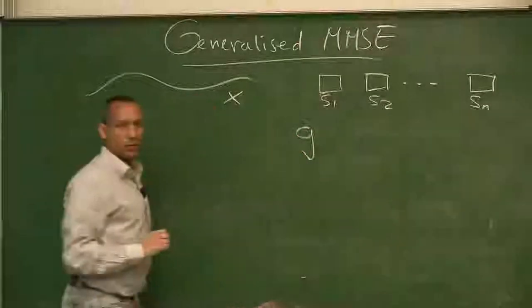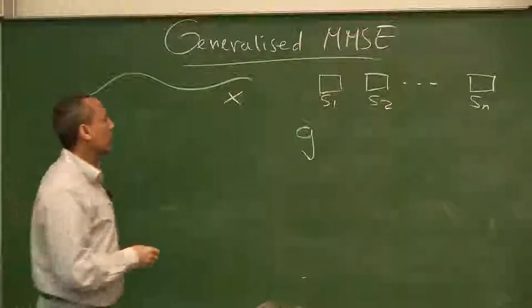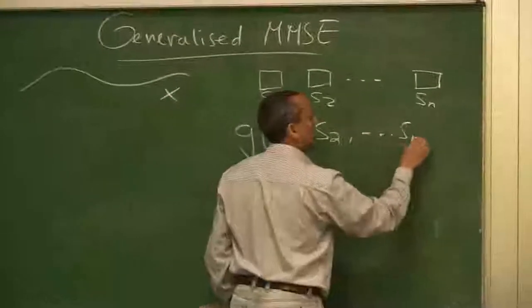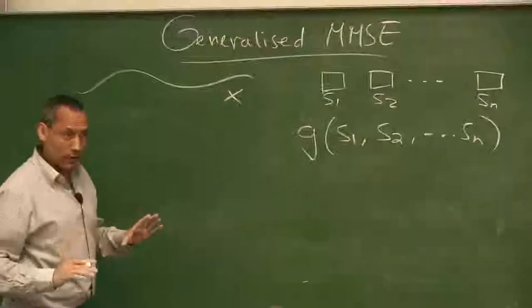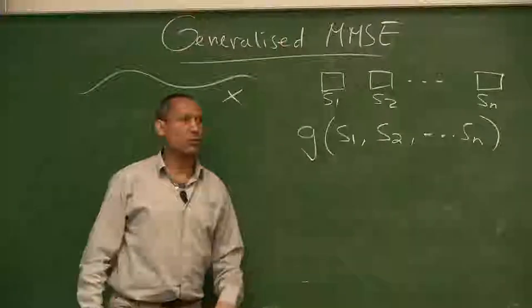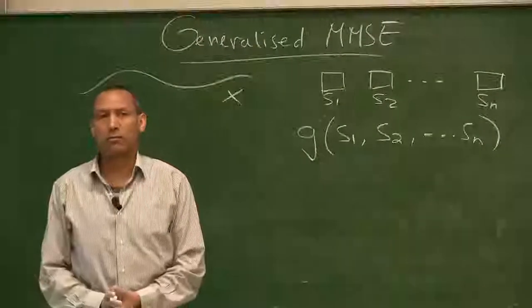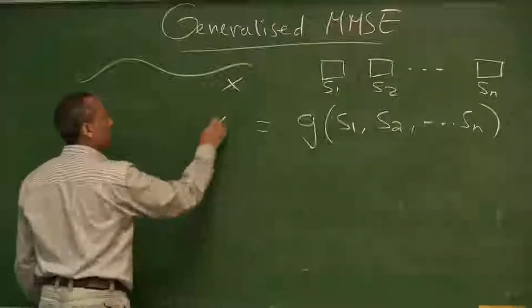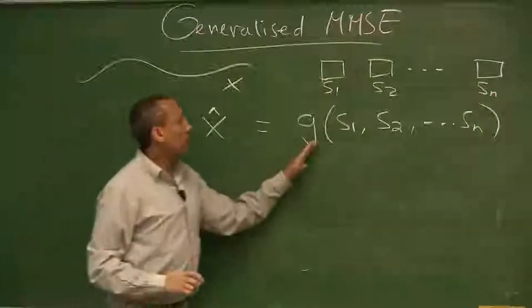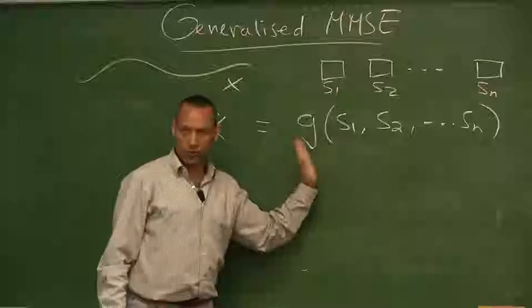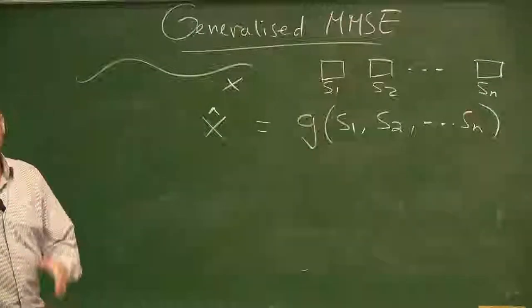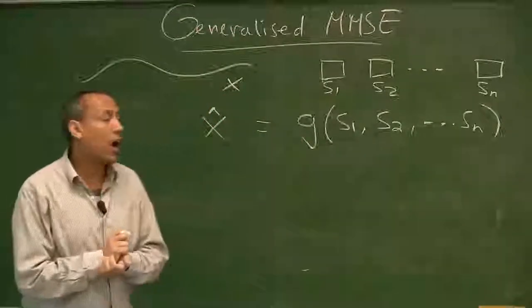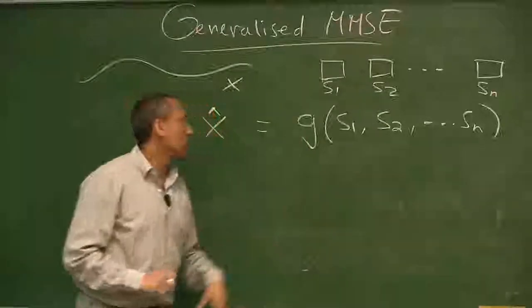Suppose our aim is to determine a function g such that if we combine s1, s2, ..., sn, the error arising is the minimum we can get. So x-hat is now a function g, and our aim is to find this g. It can be a linear function, it can be a non-linear function — we make no assumption. So how can we determine g?